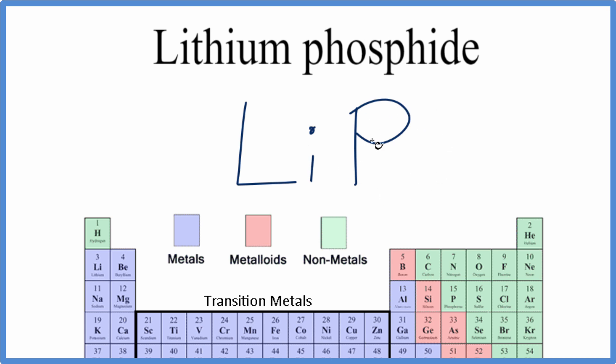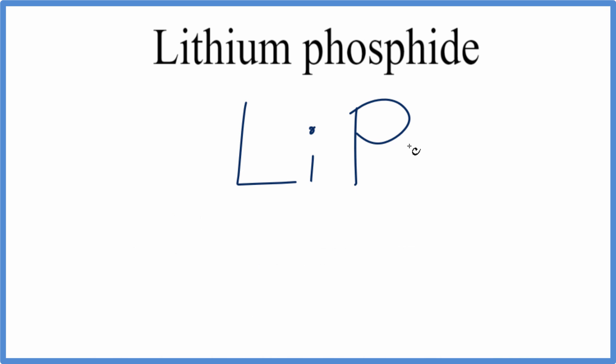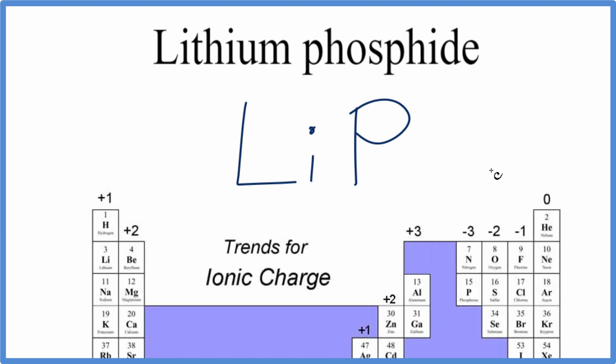So lithium is a metal, and the phosphide, the phosphorus here, is a non-metal. A metal and a non-metal gives us an ionic compound, and we need to balance the charges to make the net charge zero.